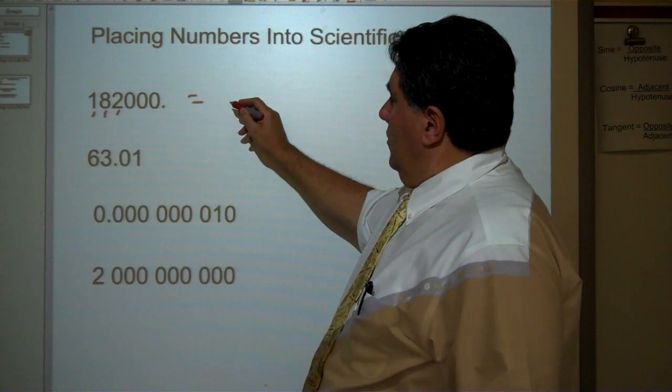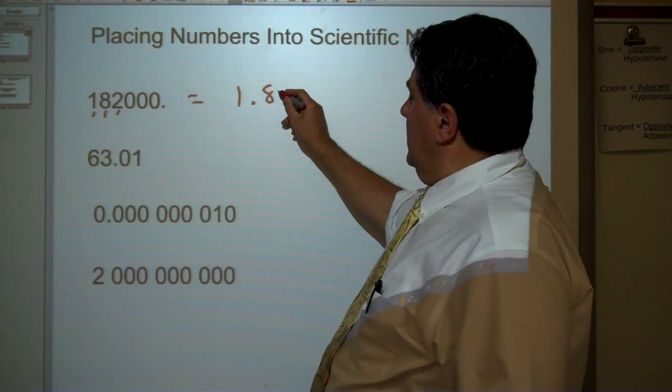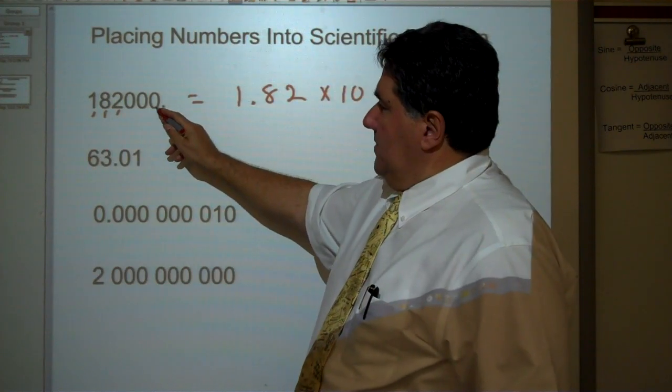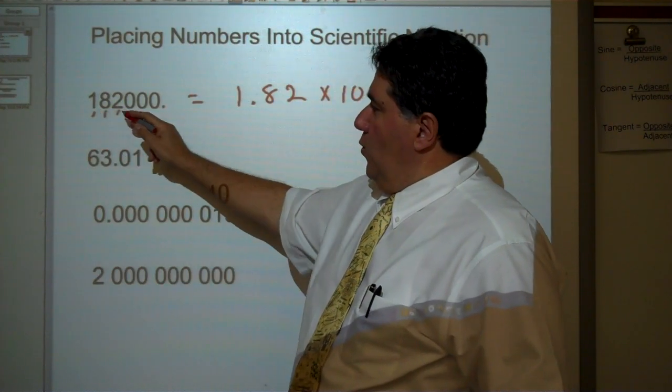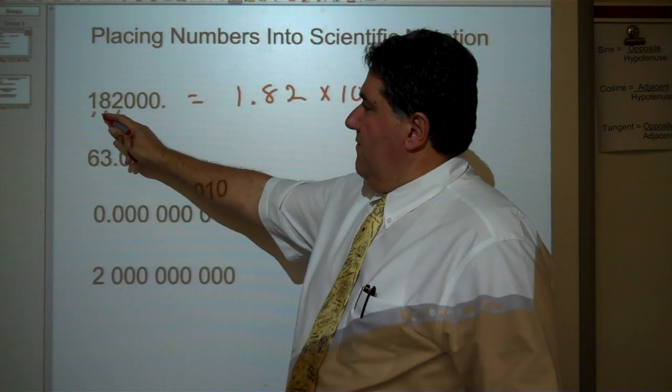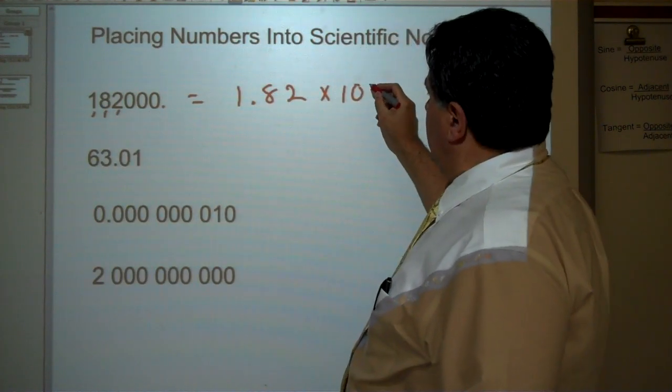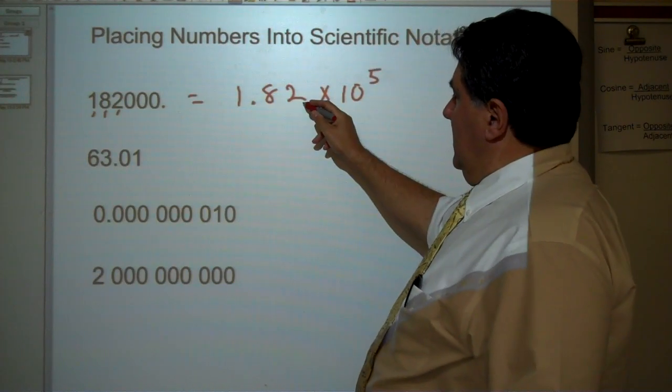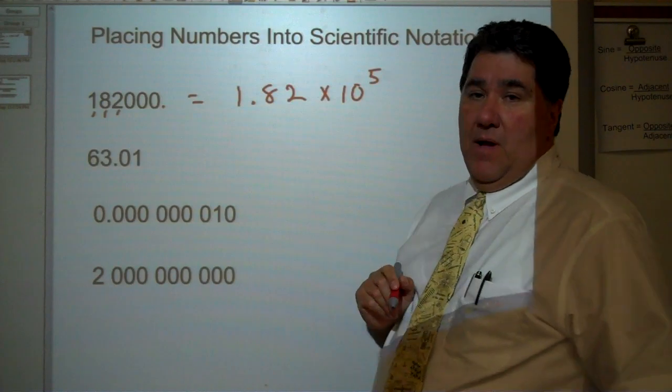So the answer will be 1.82 times 10. And how many steps do we need to get that decimal point between the 1 and the 8? It's 1, 2, 3, 4, 5 steps. That's times 10 to the positive 5. Three significant figures times 10 to the positive 5.